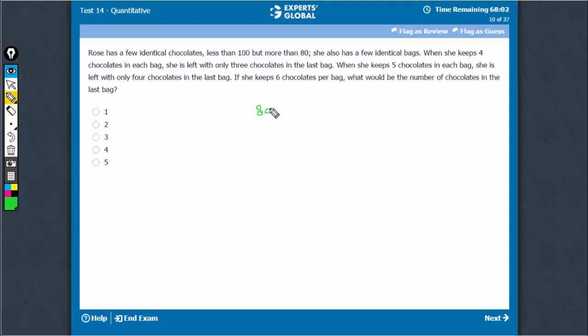The number of chocolates is between 80 and 100. When she keeps 4 in each bag, suppose the number of chocolates filled with her is x. When she keeps 4, she is left with 3.